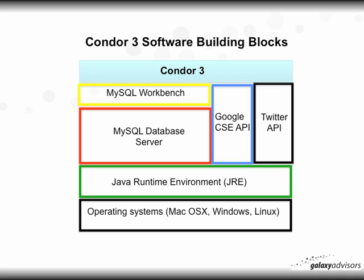Pictorially, here are the software building blocks for Condor 3. At the lowest level is the operating system — your Mac OS X, Windows, or Linux. Next, you have the Java Runtime Environment, abbreviated JRE. Then the MySQL database server. You also have a couple of optional APIs, such as the Google Custom Search Engine API and the Twitter API, which enables Twitter fetching.